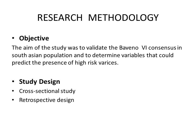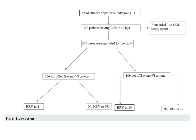Research methodology: The objective of this study was to validate the Bavino 6 consensus in South Asian populations and also to determine variables that could predict the presence of high-risk varices. High-risk varices are defined as grade 3 esophageal varices, or grade 2 varices with red whale markings, or any gastric varices.